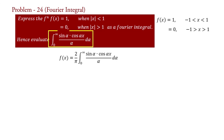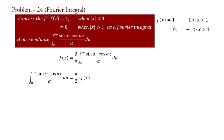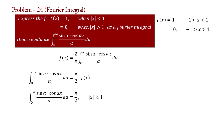Now let's evaluate the required term from this integral. Rearranging, we get ∫₀^∞ sin(α)cos(αx) / α dα = (π/2) f(x). In the region |x| < 1, f(x) = 1, therefore this integral equals π/2. In the region |x| > 1, f(x) = 0, therefore this integral equals 0.